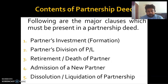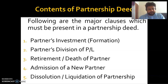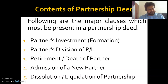The main contents of the partnership deed cover five areas: who the partners are, how investment will be made, how the partnership is formed, how profit and loss will be divided, and what happens in cases of death, retirement, or liquidation.